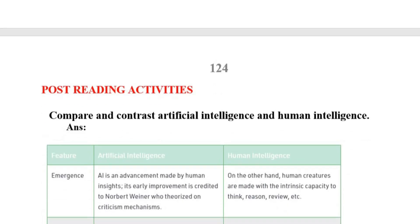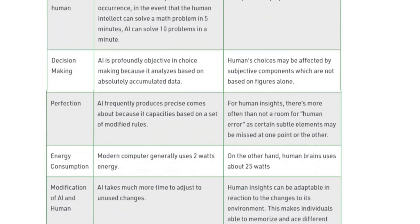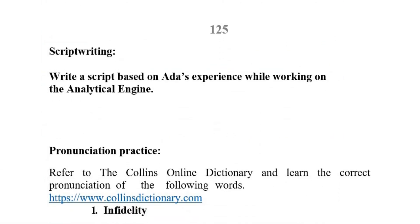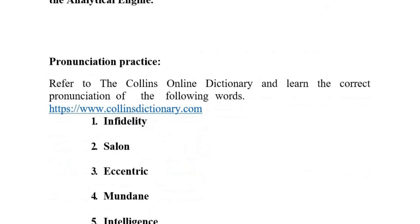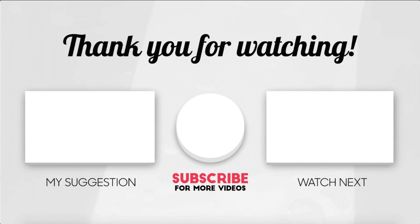Post-reading activity: Compare and contrast artificial intelligence and human intelligence. Script writing: review the model and use it as a reference. Final pronunciation practice words: infidelity, salon, eccentric, mundane, and intelligence. This concludes the fourth unit's lesson explanations and task answers.